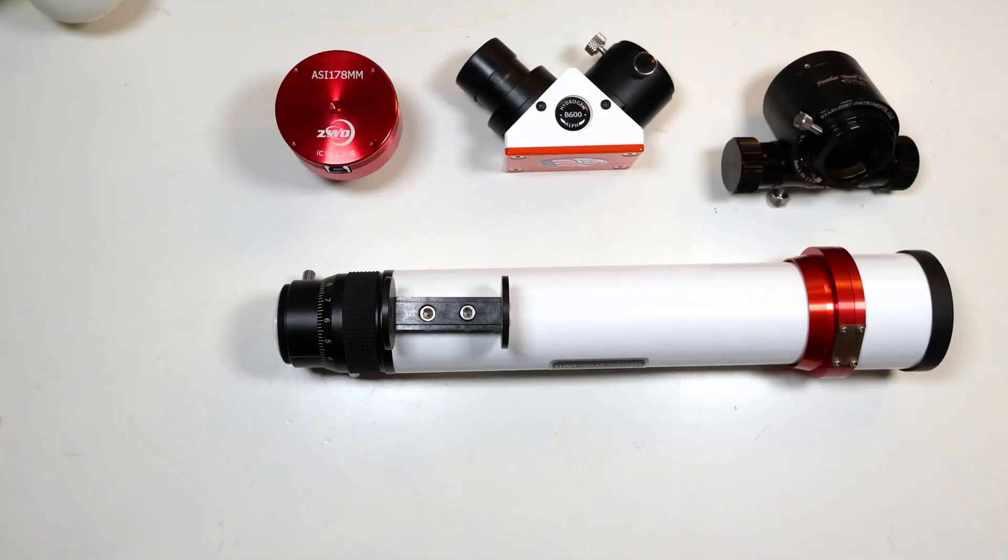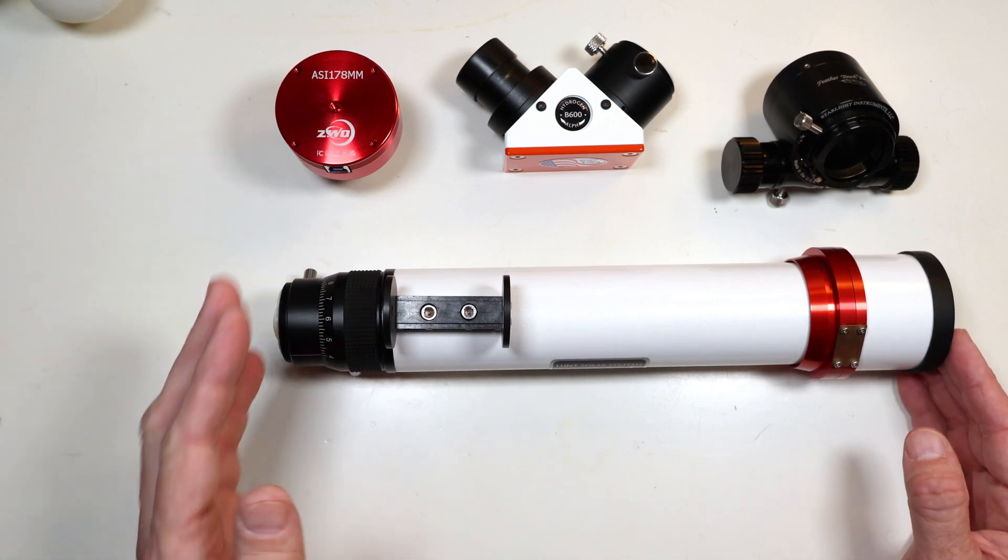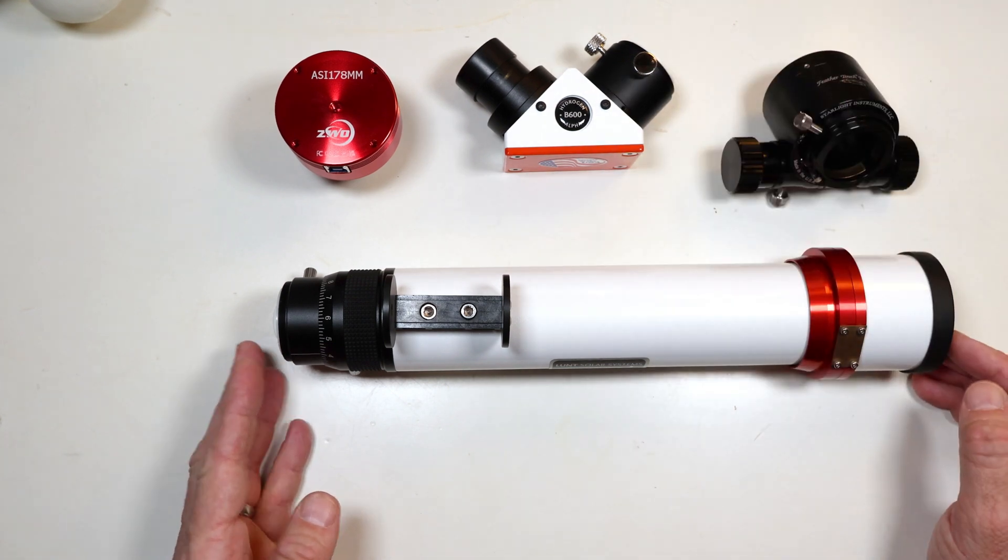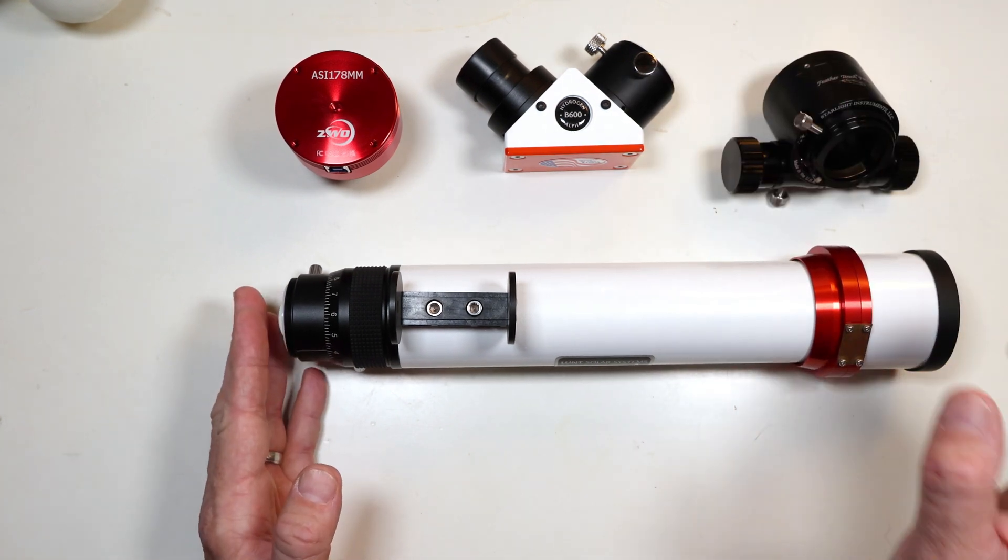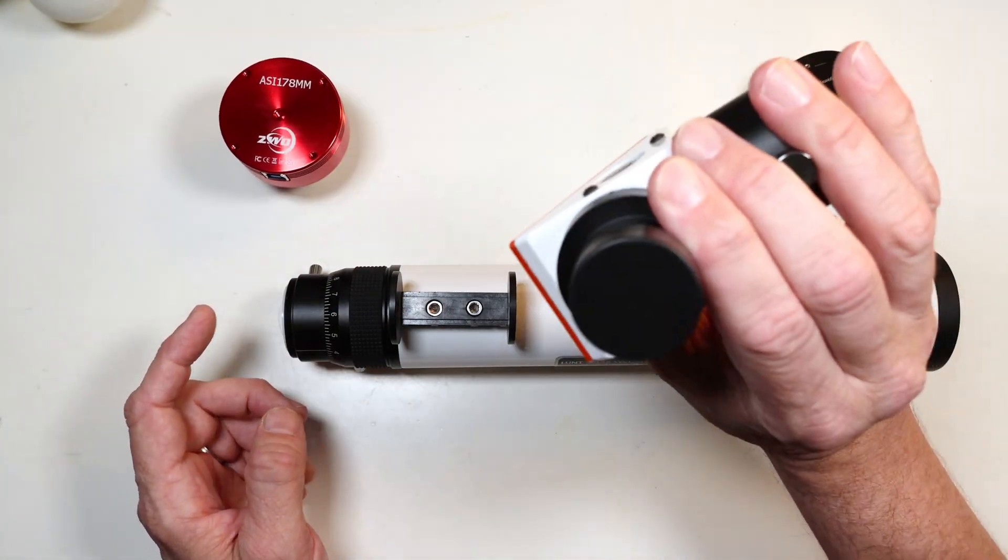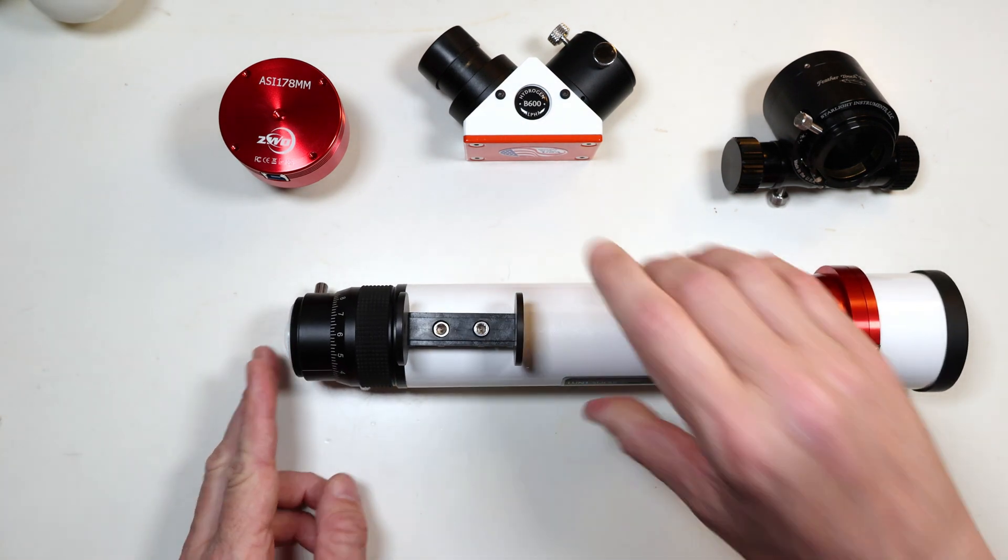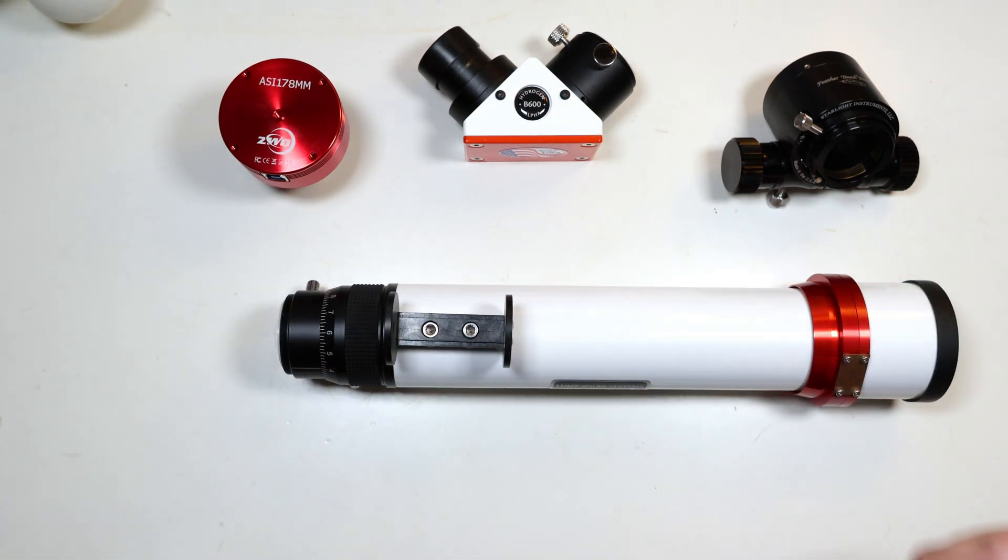Now on how to install your Starlight Instruments Feather Touch Focuser. First, I'm going to remove any cameras, eyepieces, diagonals from my telescope, and make sure that you cover the ends of your cameras, your diagonals, and even the draw tube of your solar telescope.